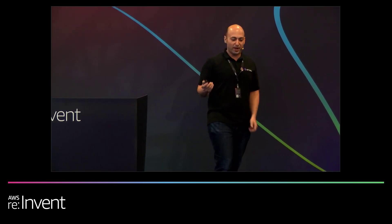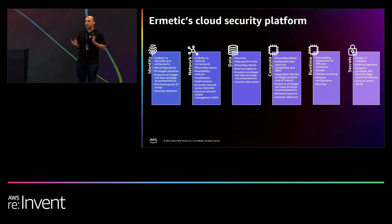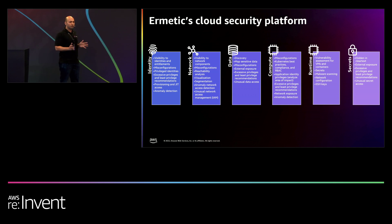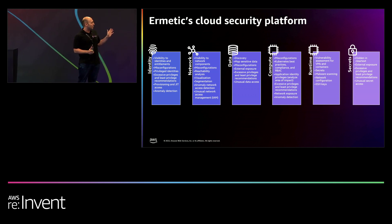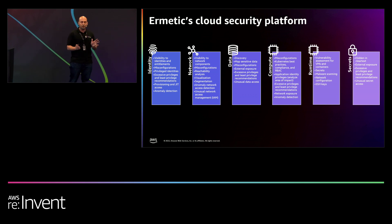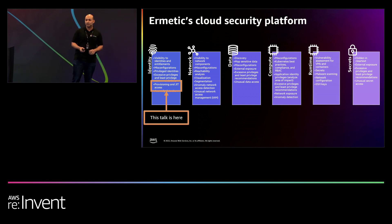In case you haven't heard of Hermetic, Hermetic is a comprehensive cloud security solution. What this means is that we provide security in multi-layers relevant to cybersecurity in the cloud. What we're going to talk about today is a new feature that we recently released called just-in-time access.